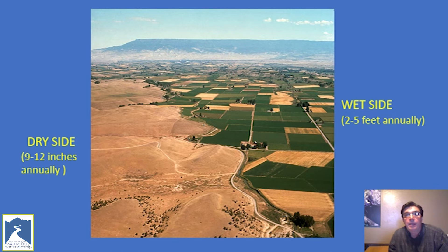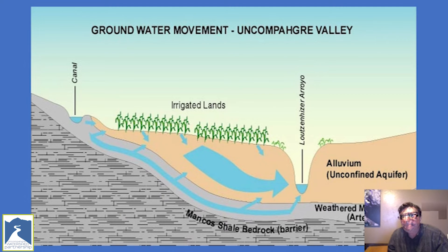Much of the Mancos Shale is irrigated in agricultural and residential areas. The Uncompahgre Valley receives about 9 to 12 inches of rainfall annually; however, irrigated parts of the valley add several more feet of water during the growing season. As seen from the photo, there is a stark contrast between irrigated and unirrigated areas in the lower Uncompahgre Valley. Our conceptual model shows that irrigation water can seep below the root zone and entrain the in-situ salt and selenium placed there millions of years ago by the Western Interior Seaway. In addition, water can also seep from unlined canals, ditches, and ponds and entrain salt and selenium in the same way.